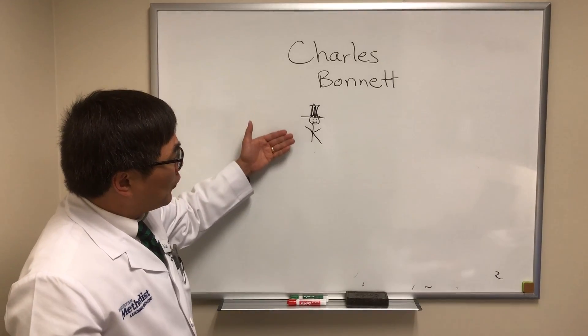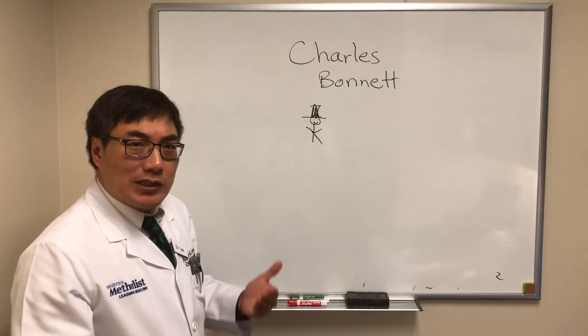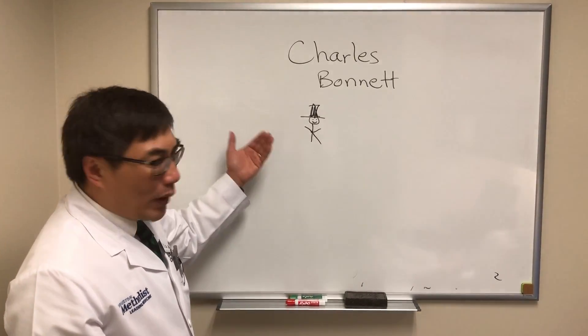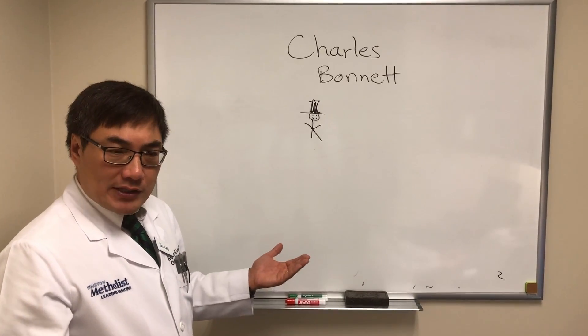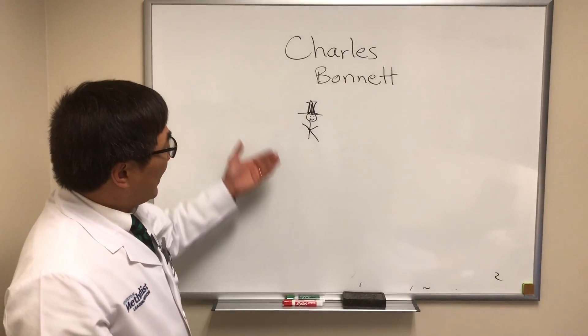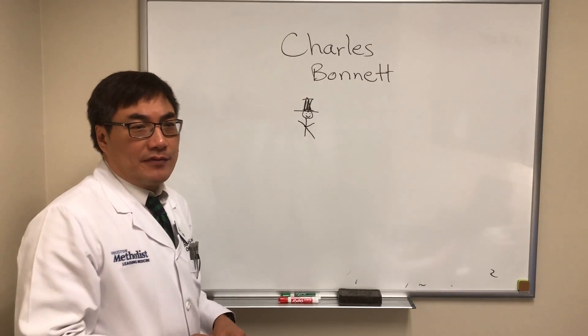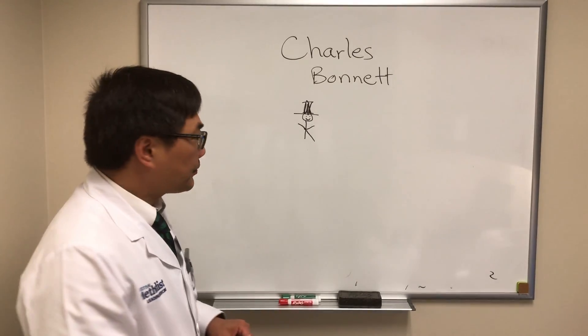The Charles Bonnet phenomenon is a form of visual hallucination — it's a release hallucination. The patient is awake and alert with no other reason to have it. It's usually a formed visual hallucination arising from vision loss.